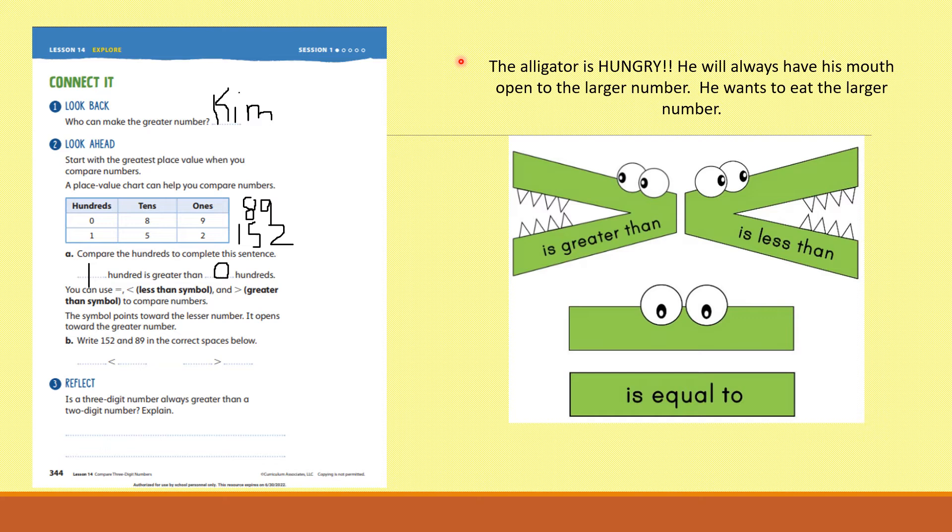It says, the alligator is hungry. He will always have his mouth open to the larger number. He wants to eat the larger number. If you keep that in your head, and remember, the alligator wants to eat the bigger number. His mouth is open to the bigger number. You will always get greater than and less than correct.